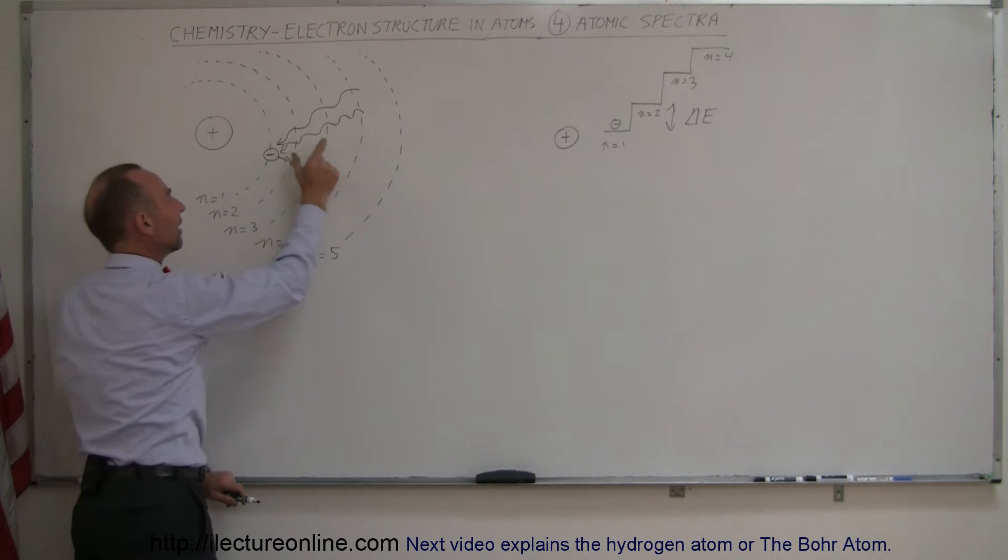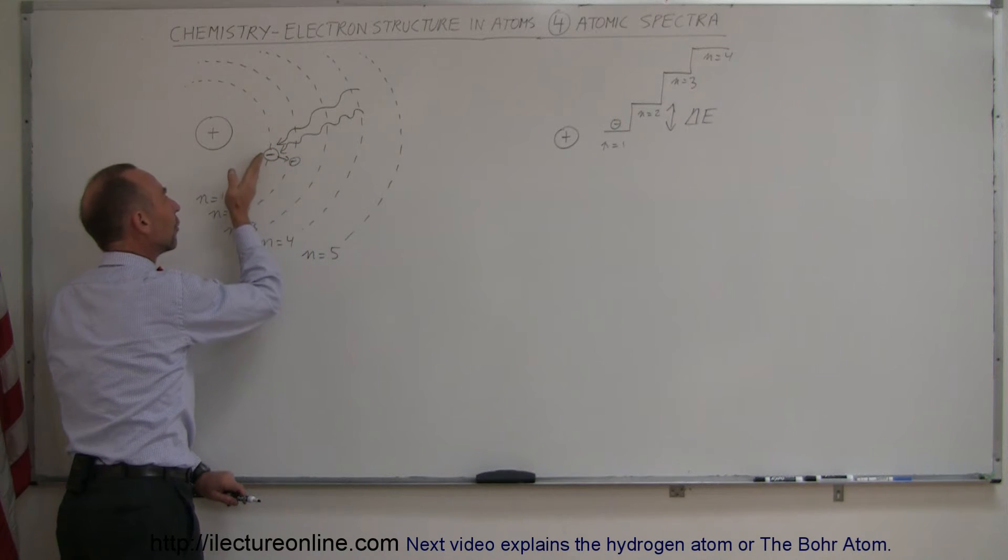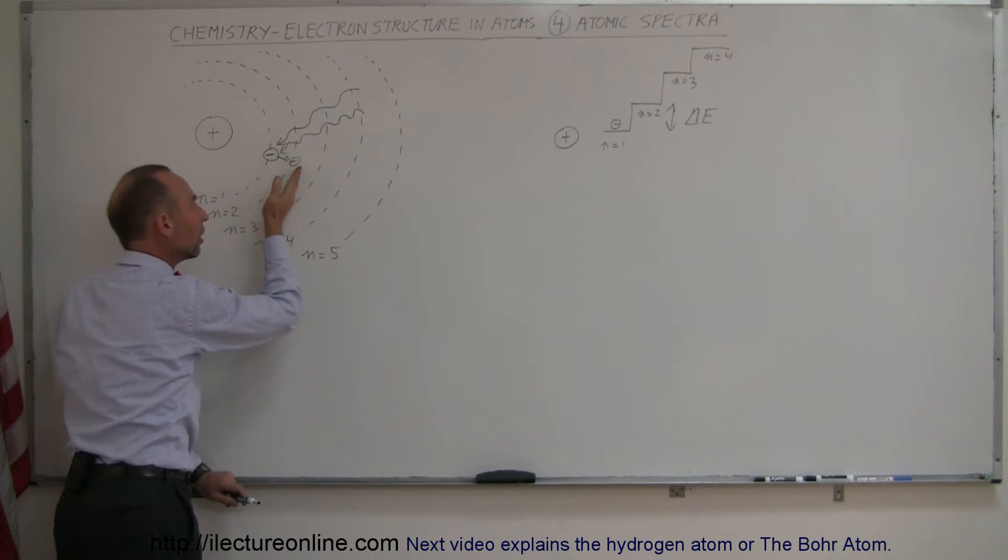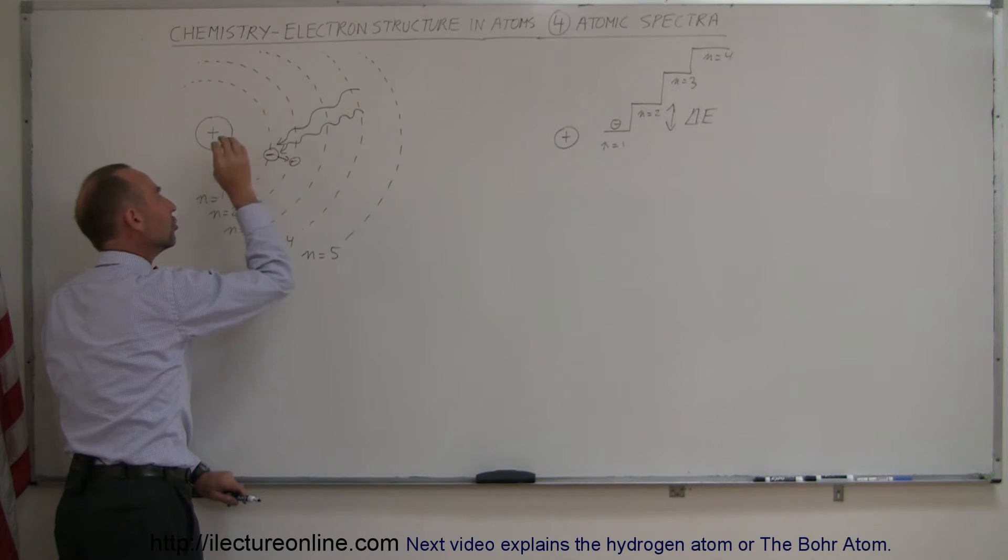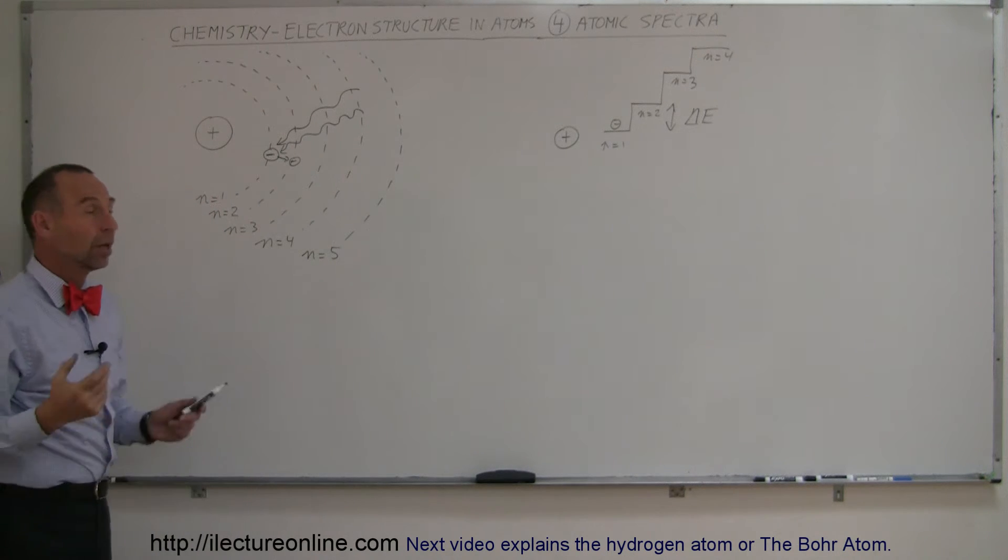Only if the electron contains the exact amount of energy to go from one level to the other, not a little bit more, not a little bit less, can the electron use it, absorb it and jump to the next level.